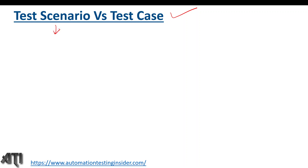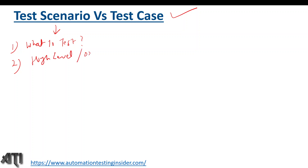What do you mean by test scenario? A test scenario describes the end-to-end functionality to be tested in any application. It focuses on what to test in any application. It is high-level documentation — mostly one-liner information. Test scenarios are derived from a Business Requirement Document or Functional Requirement Specification.